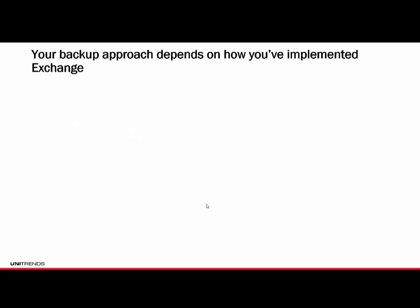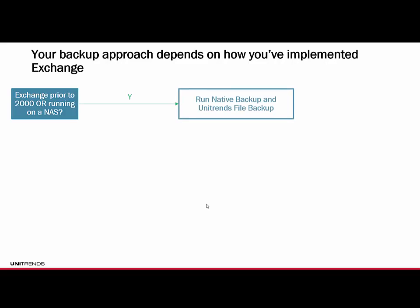Your backup approach really depends on how you've implemented Exchange. If you're running Exchange prior to 2000 or running Exchange on a NAS, you need to make sure you're running a native backup and then run Unitrends file-level backups through our file-level agent. See the file-level backups module for more details. You'd go through Exchange, set up a maintenance routine to dump out the native flat file to the machine, and pick that up through Unitrends file-level backups.